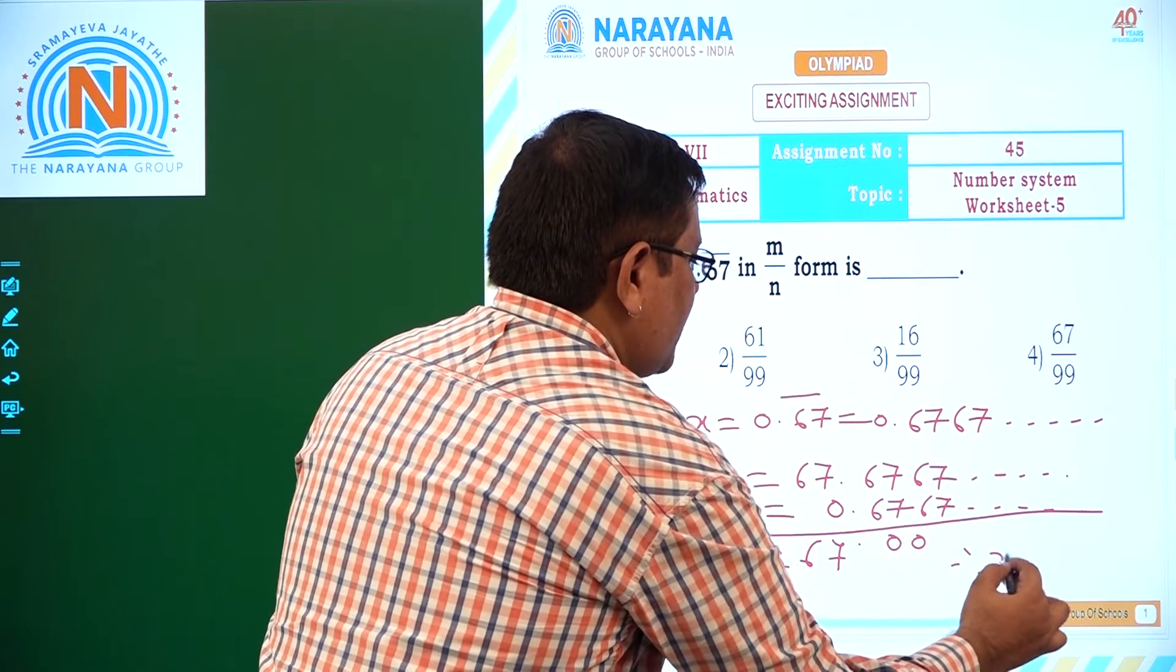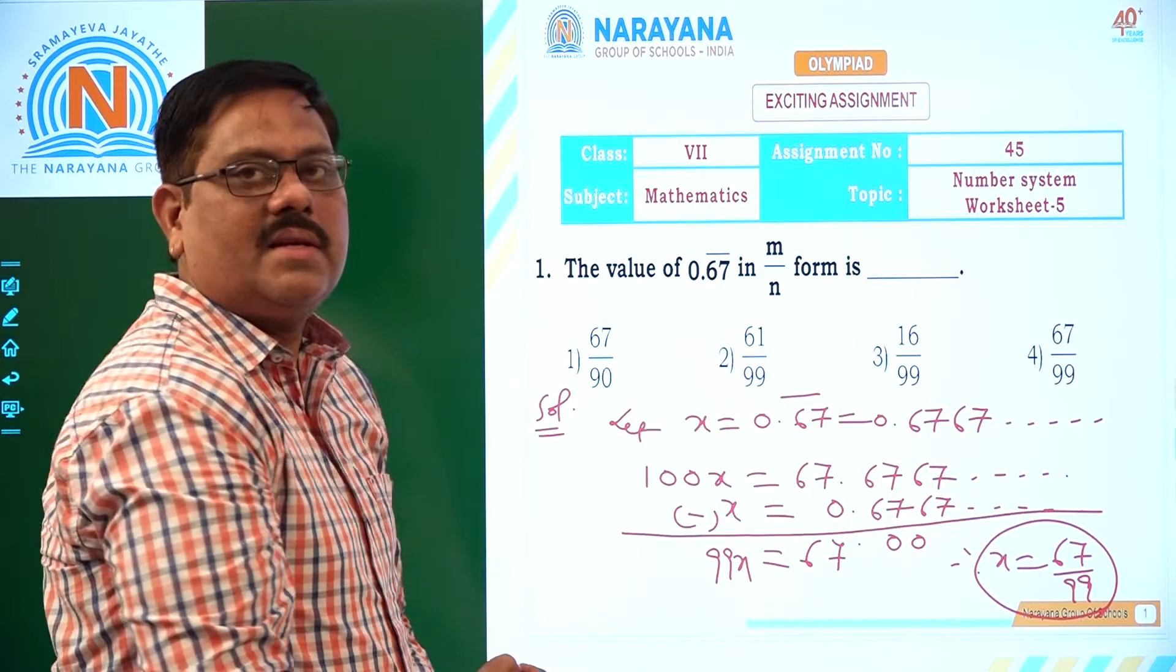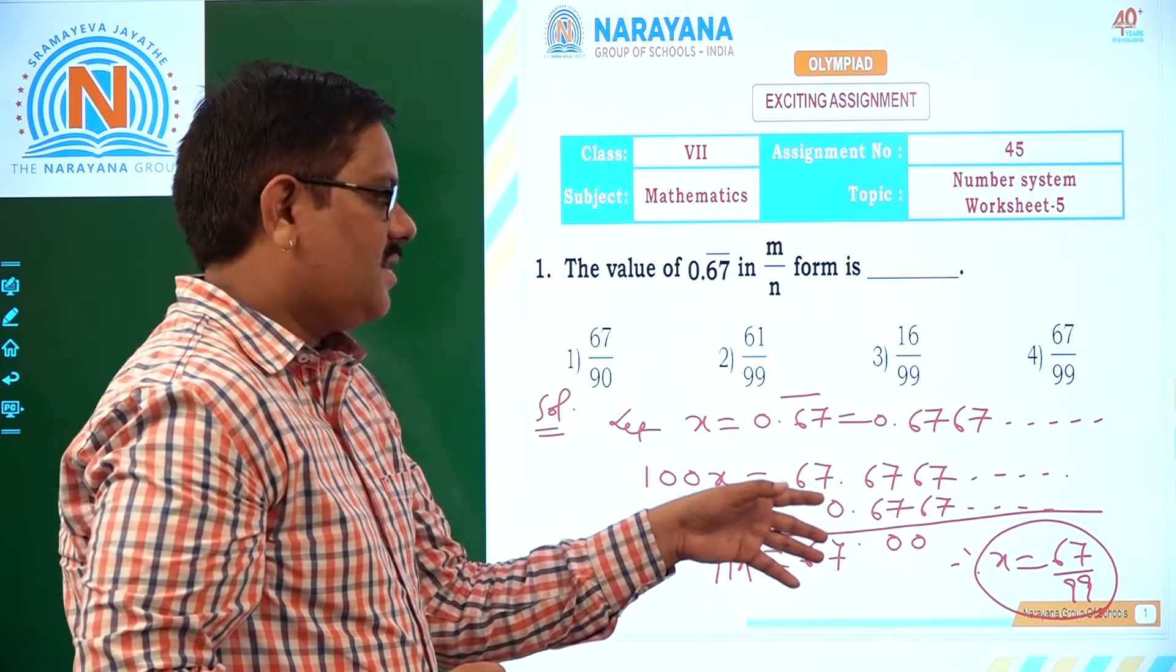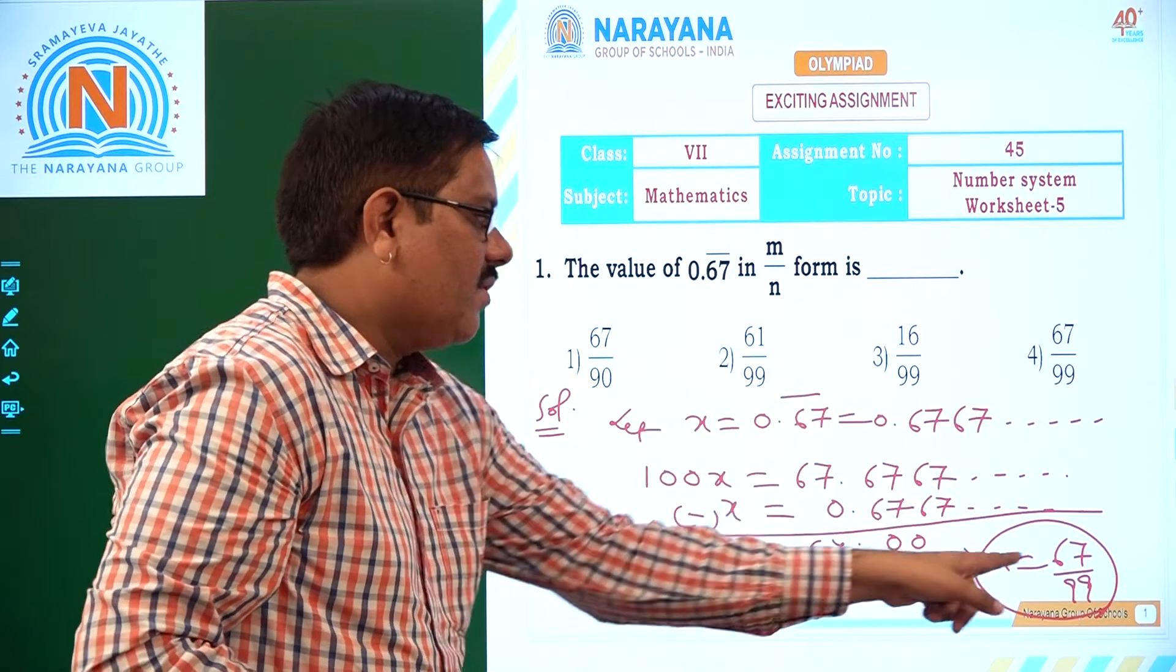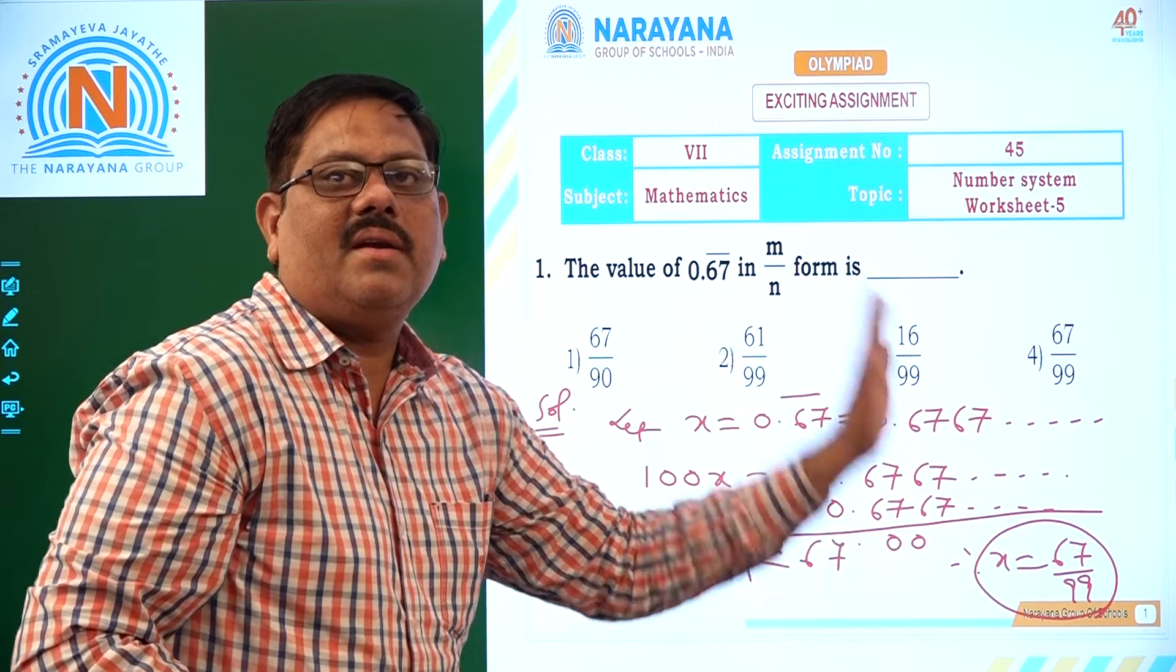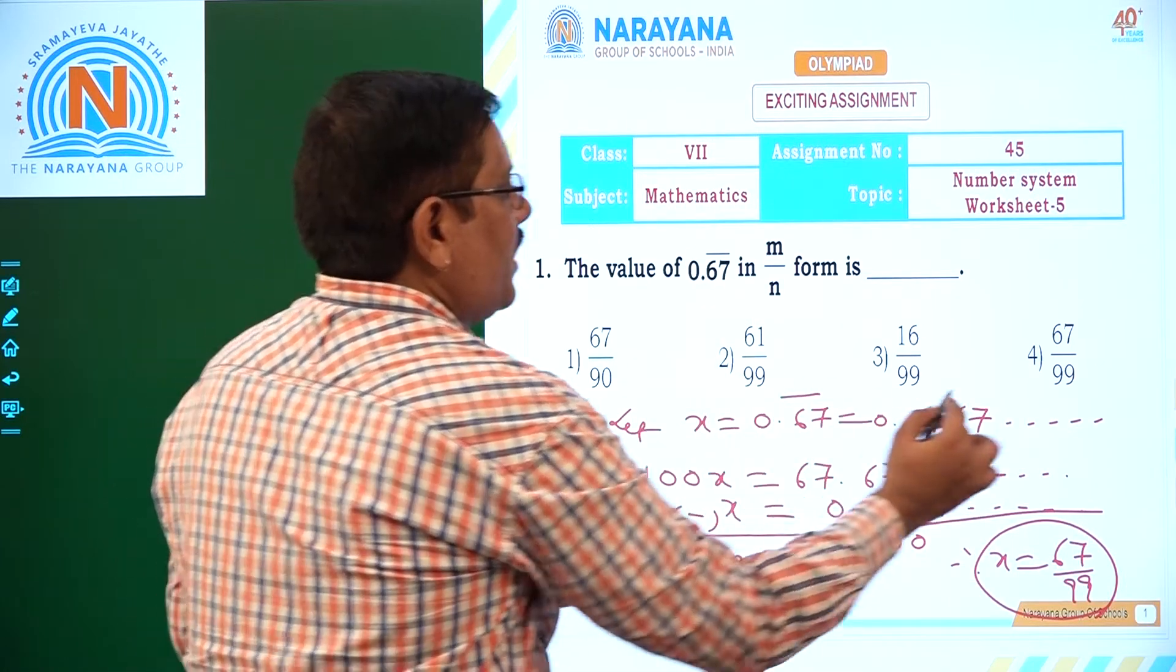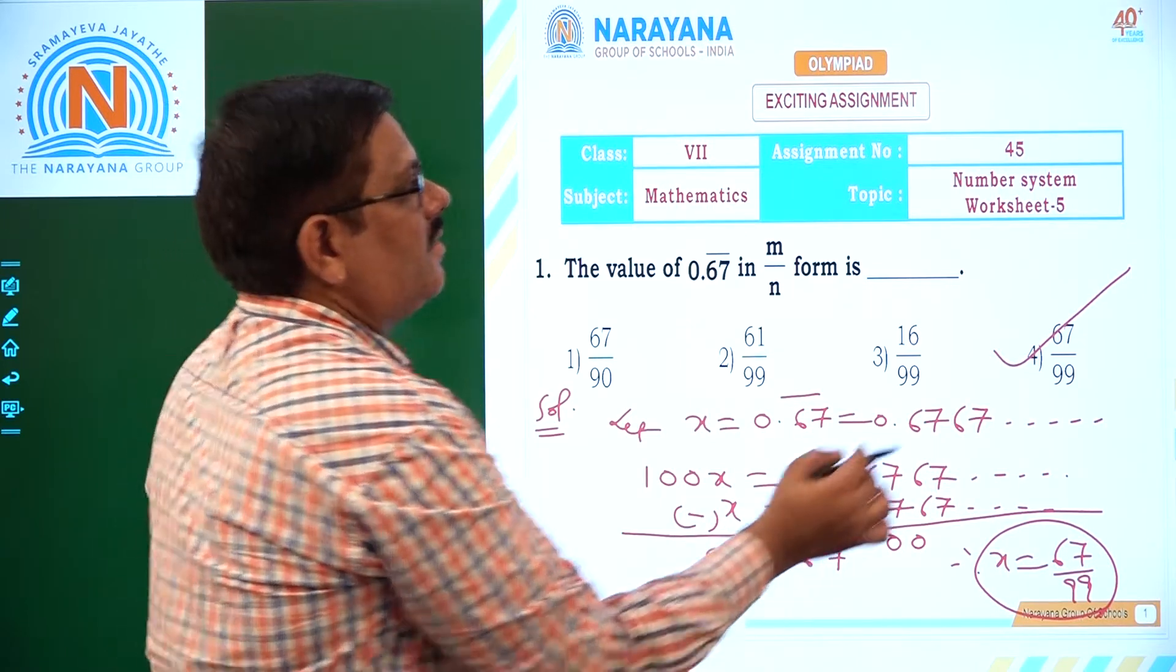That is, of course, 100 minus x is nothing but 99x. 99x is 67. Therefore, what is x value for us? 67 by 99. 67 by 99 is the value of x. What is x here? 0.67 bar. So 0.67 bar is equivalent to 67 by 99. This is in the form of m by n. So for us, what is the right answer? 67 by 99 is nothing but fourth option.